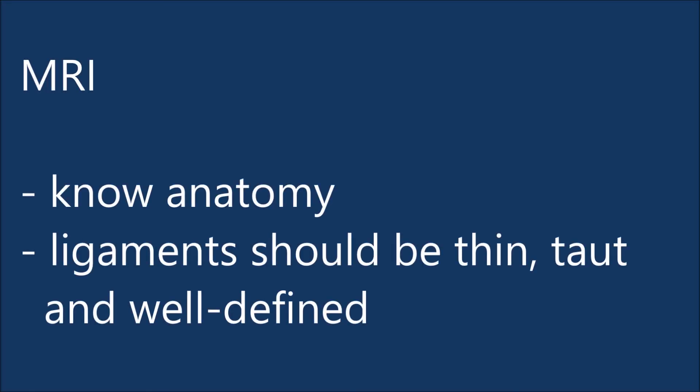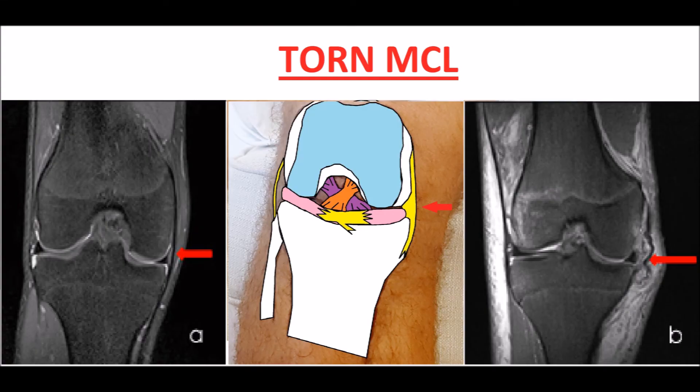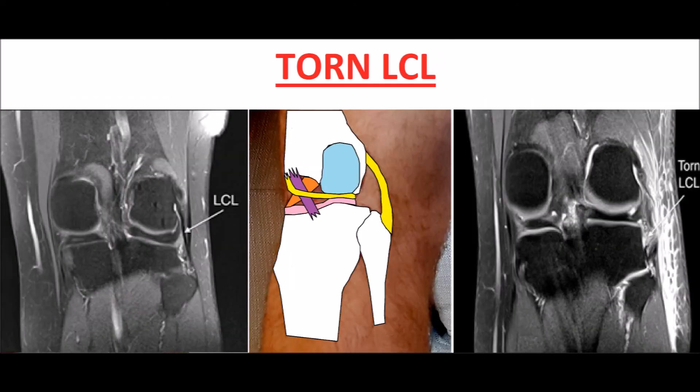MRIs are the gold standard of imaging. They are quite easy to interpret as long as you know your anatomy and remember that ligaments should be taut, thin and well-defined. In picture A there is a normal, intact, thin MCL, whereas in picture B the MCL is ruptured and appears as curly black lines. The same can be said for the torn lateral collateral ligaments seen on the right.